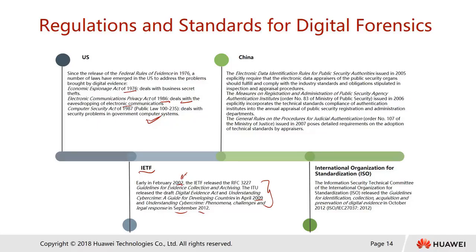As for China, China came out relatively late. In 2005, they started with the electronic data identification rules for public security authorities and came up with some acts. After that, the ISO — the International Organization for Standardization — came up with ISO standards for the identification, collection, acquisition, and preservation of digital evidence around October 2012. These standards are recommended for companies to follow.